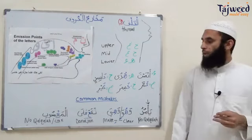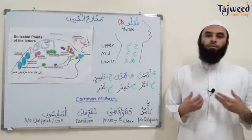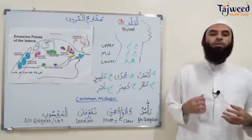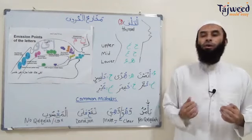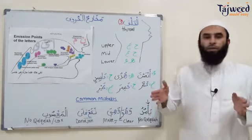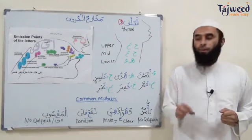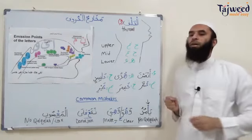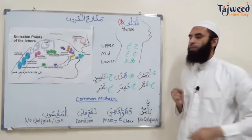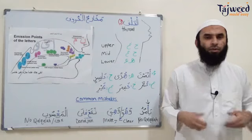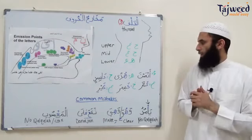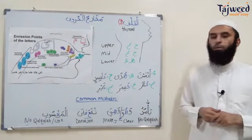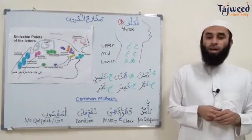The last common mistake: al-maghdoobi, ghayril-maghdoobi. The ghayn here — a lot of times people change it to qaf: maqdoobi, maqdoobi. Why? Because ghayn is not in their language. We have to make sure that ghayn is pronounced properly: ghah, ghah, al-maghdoobi. And there's no qalqala — not maqdoobi, maqdoobi, but al-maghdoobi.